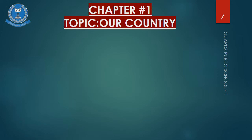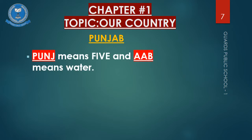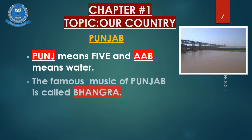Let's discuss our second province, Punjab. Do you know what is the meaning of Punjab? Punj means five and aap means water. Punjab is a province in which five rivers flow. The language that people of Punjab speak is called Punjabi. The famous music of Punjab is Bhangra.